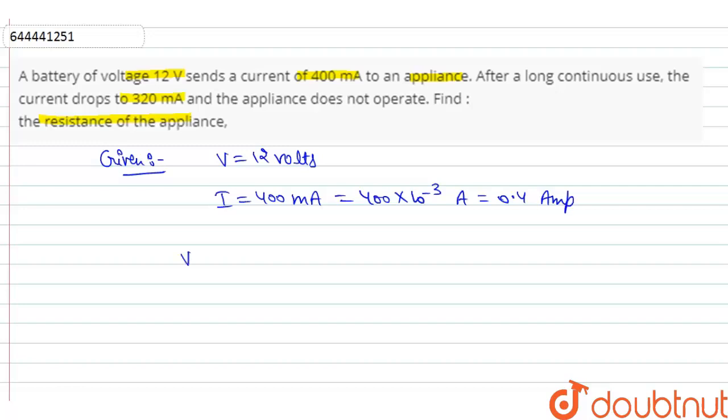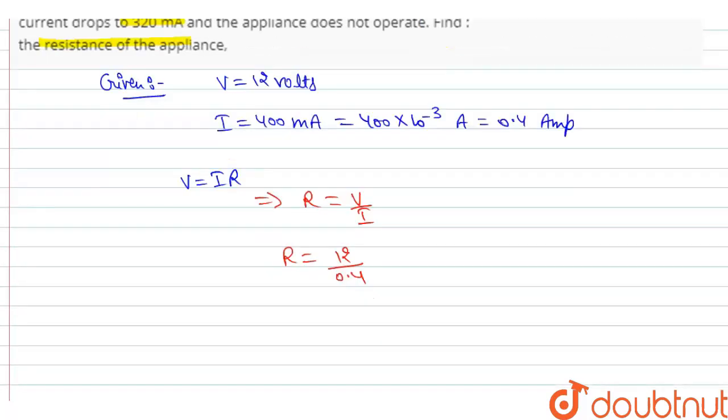We know the formula for resistance, that is V is equal to I R. So the value of R is equal to V upon I. So R is equal to 12 by 0.4, R is equal to 30 ohm.